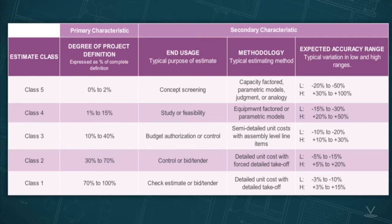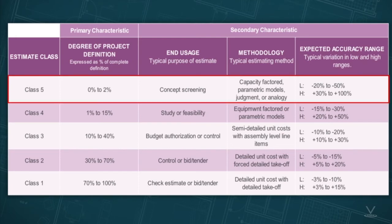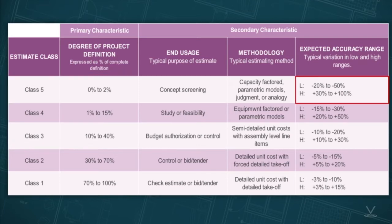Let's go over an example of how you would read the matrix. Let's say you have very little knowledge about a project — maybe you have a general idea of the size, but that's about it. Your knowledge would fall within a Class 5 in the matrix. You can prepare a rough order of magnitude estimate, and it would be appropriate if your estimate fell within 50% lower or 100% higher than expected.